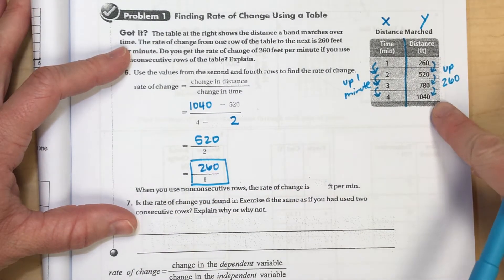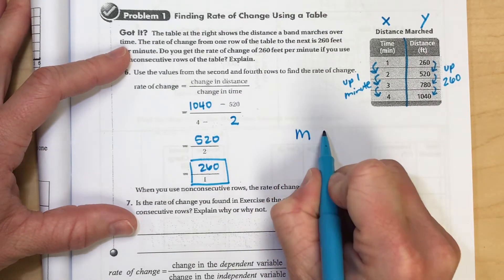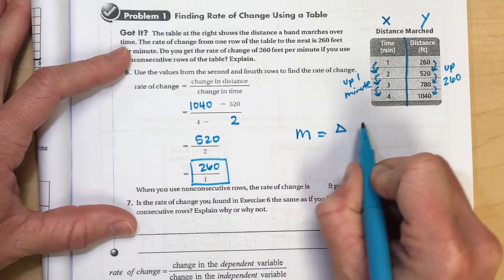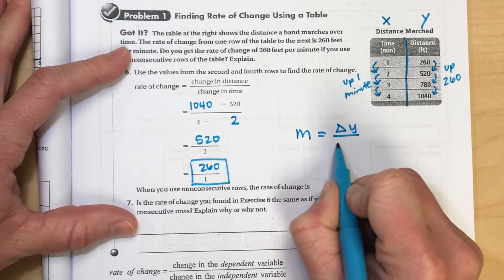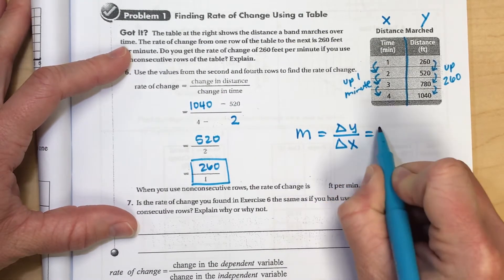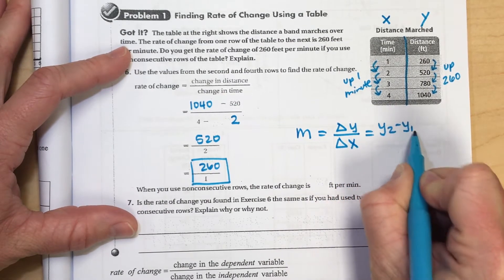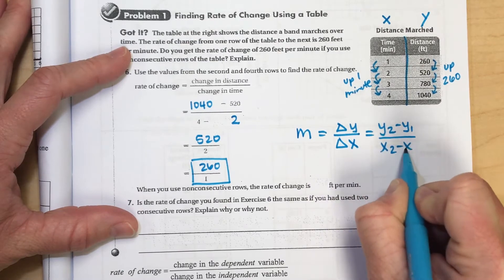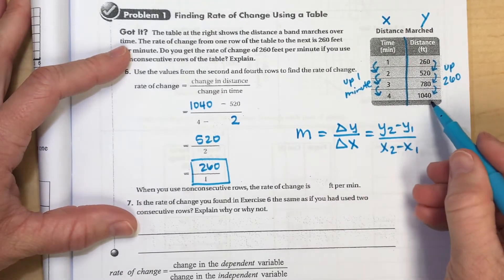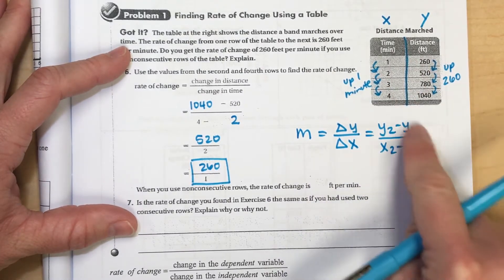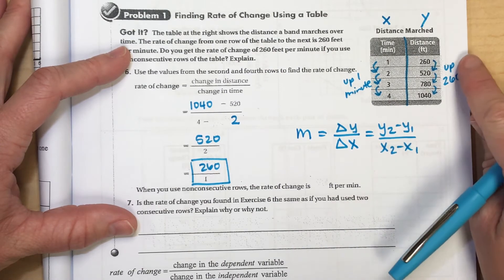So if you just want to think of m as the change, that's what that triangle means, the change in y over the change in x, which we call y2 minus y1 over x2 minus x1. Pick any two points in the table and use your formula and you'll find the change.